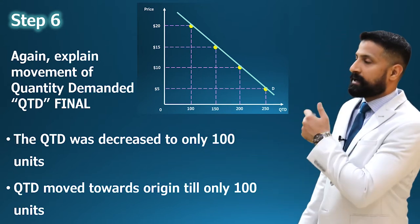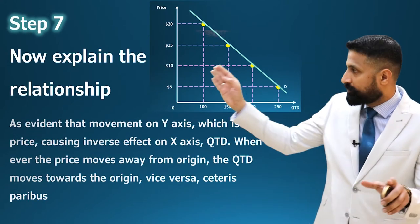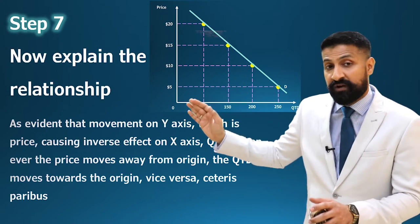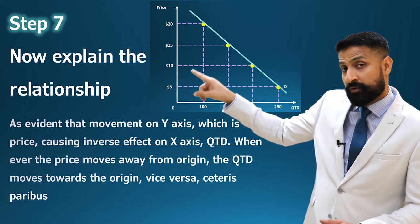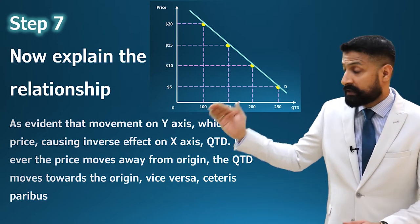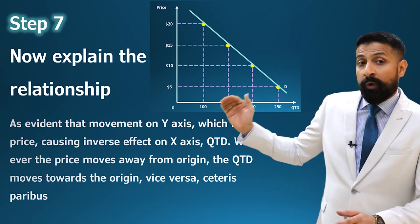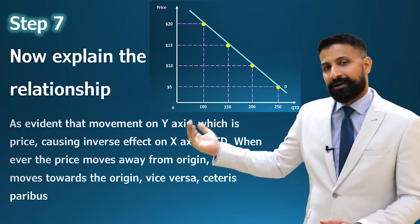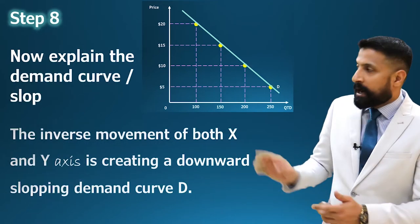Step seven: explain the relationship between both axes. You say: 'As evident, the movement on the Y-axis — which is price — is causing an inverse effect on the X-axis.' Do not write that the X-axis is causing the effect on the Y-axis — that would be wrong. So: 'Whenever the price moves away from the origin, the quantity demanded moves toward the origin, and vice versa, ceteris paribus.'